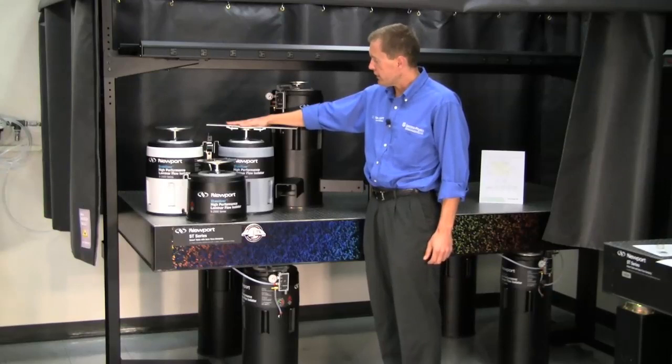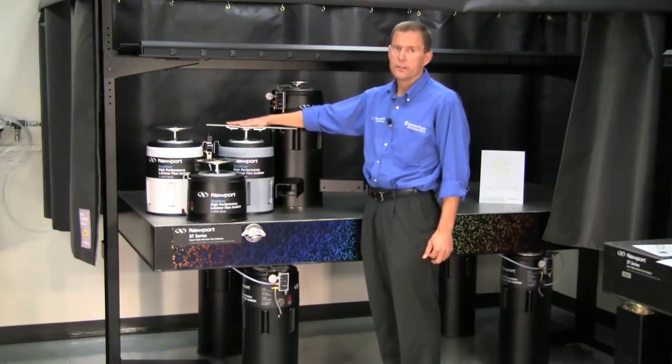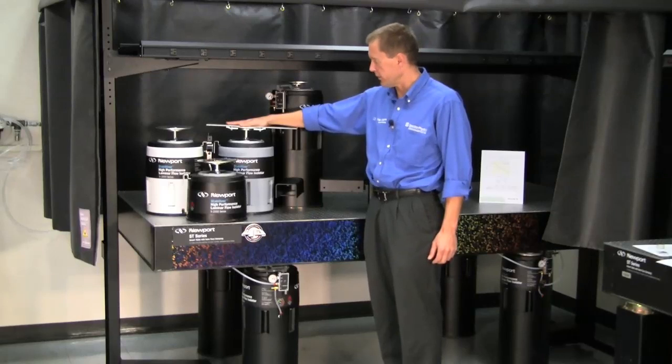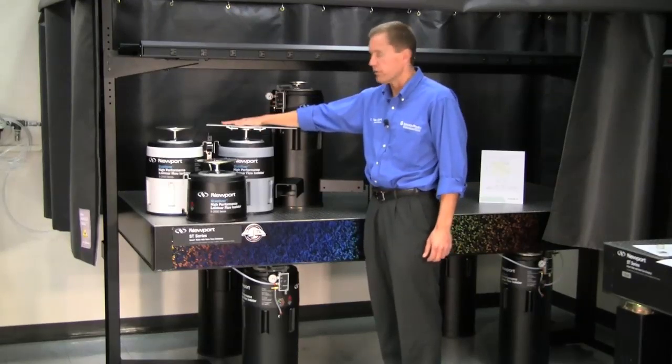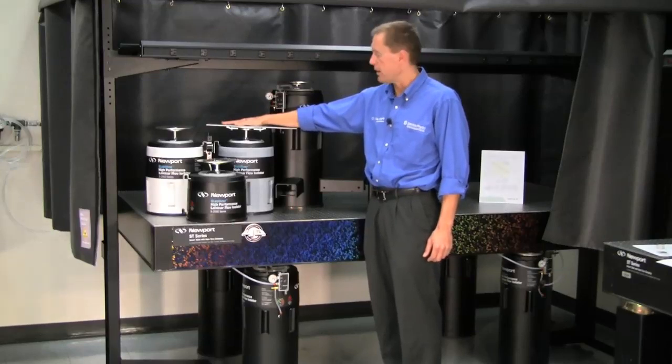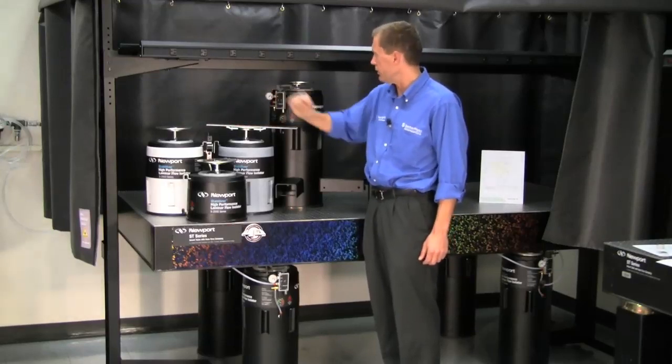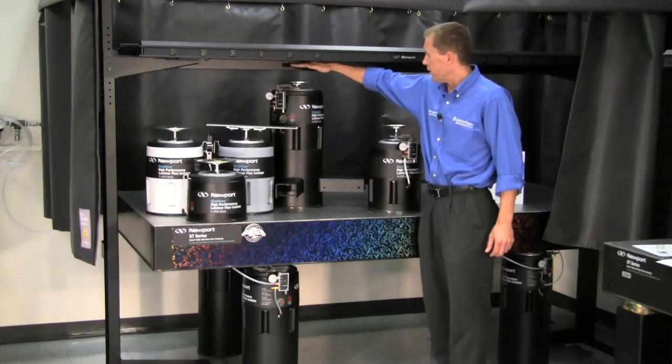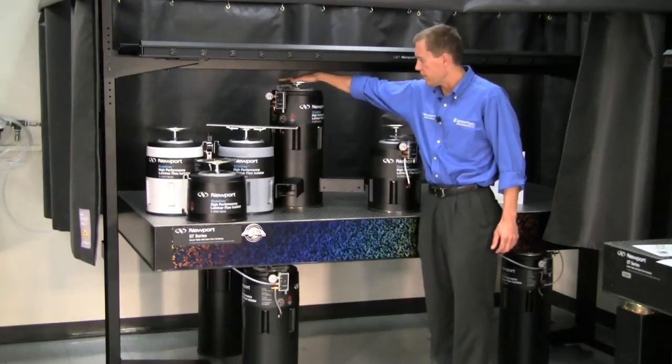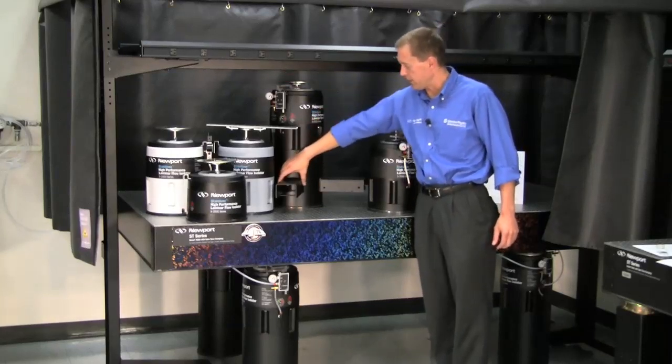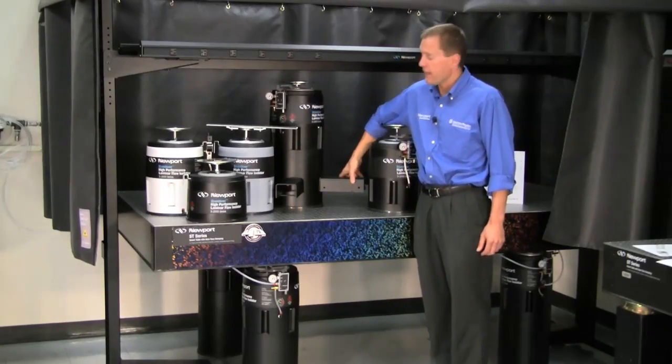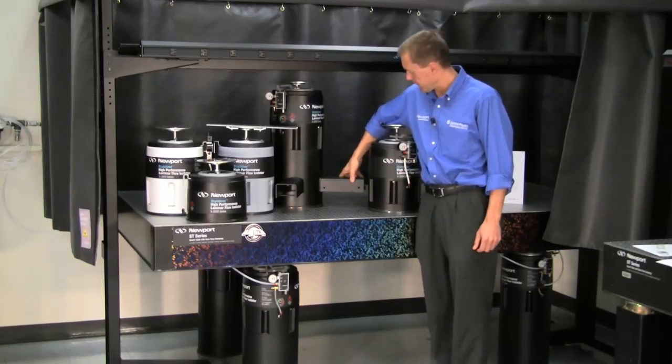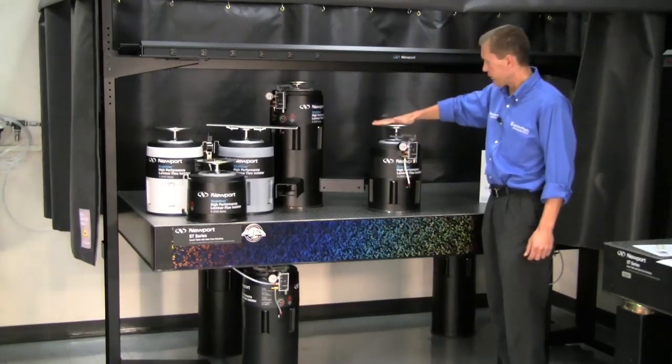It's constructed on the inside of all 316 stainless steel, which makes it significantly less magnetic than any other isolator on the market, and the outside of all these isolators is constructed of aluminum, so they're very non-magnetic. We have yet another version, the same isolator top, but the bottom has flanges welded to it to use tie bars and casters. This allows you to make your table setup mobile.